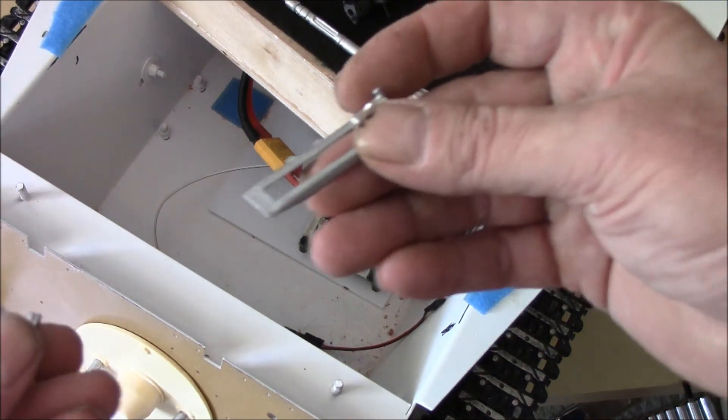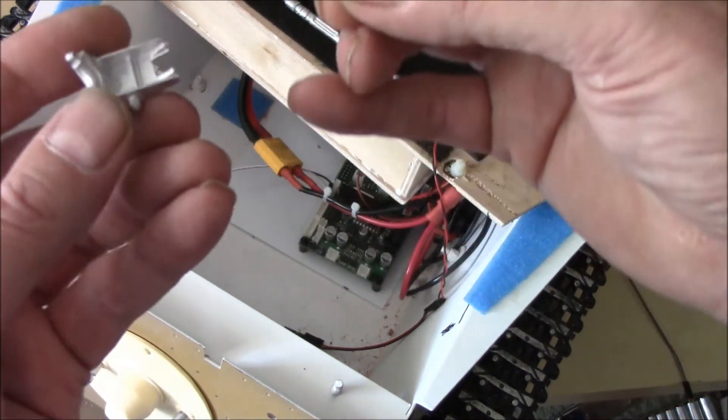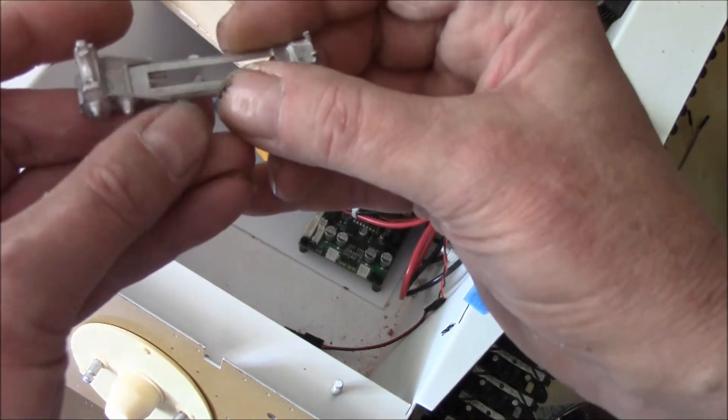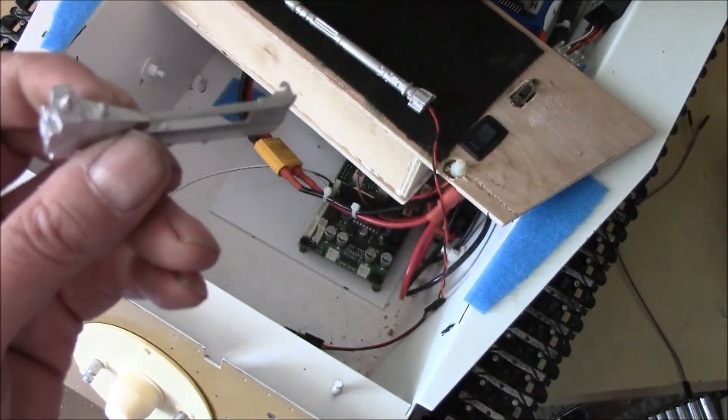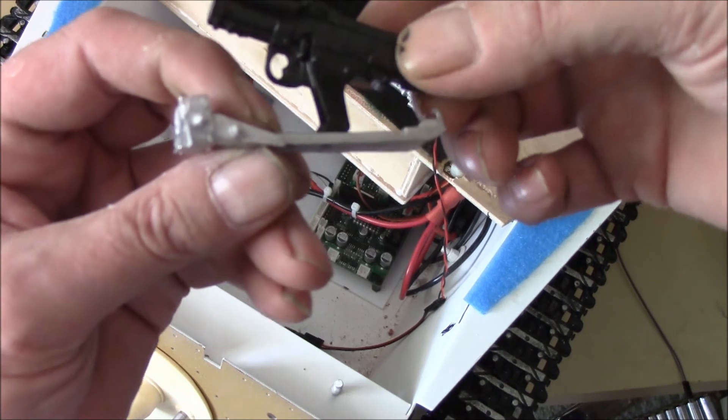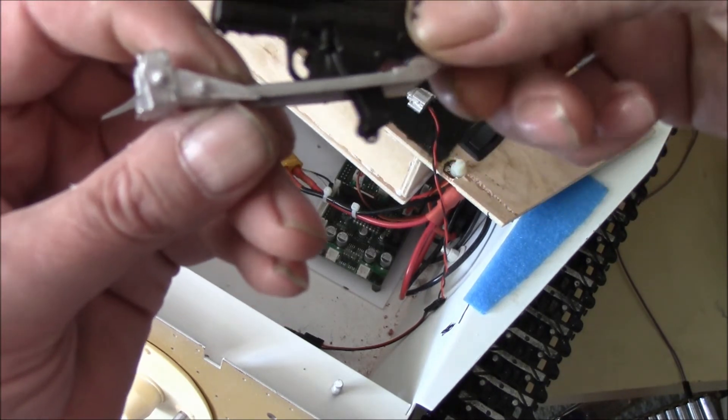This is the mount that the machine gun will go on to. This will get glued in here like this, and then the machine gun sits in there and those two catch in the back.